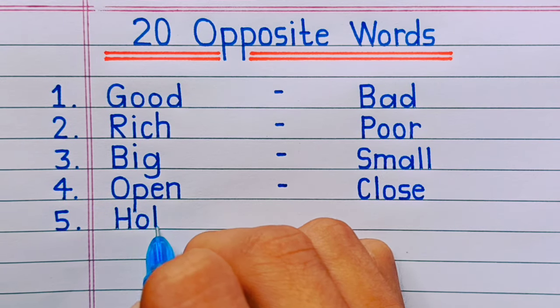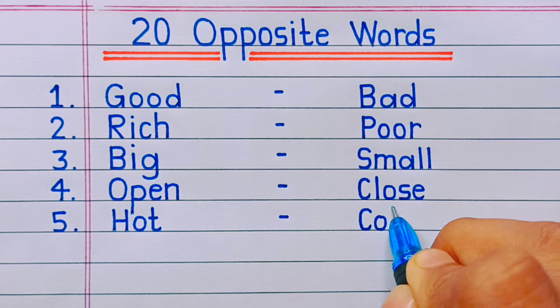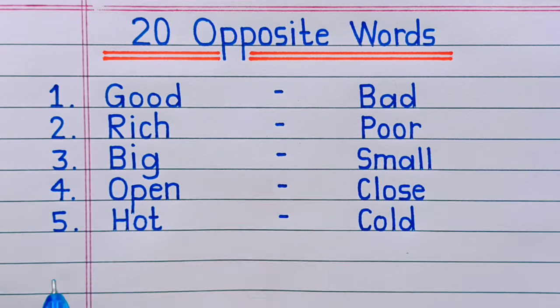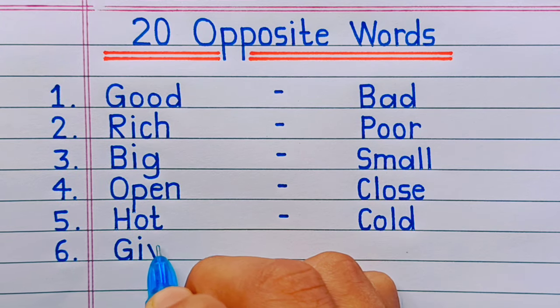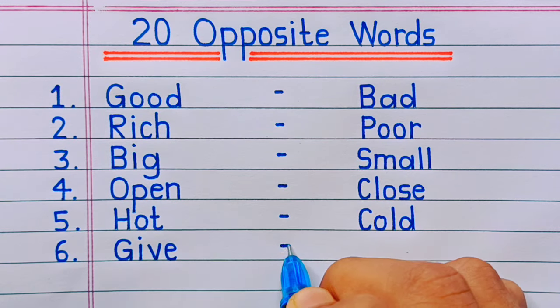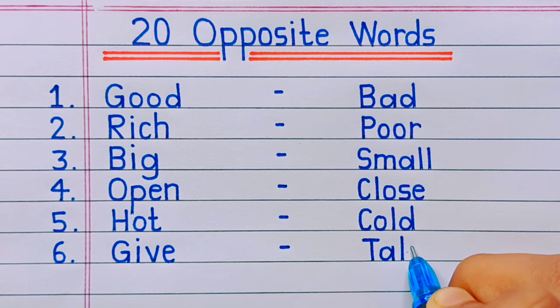Number five: hot, cold. Number six: give, take.